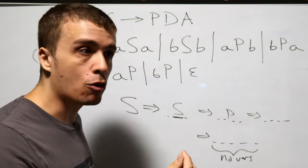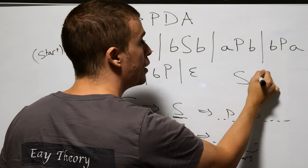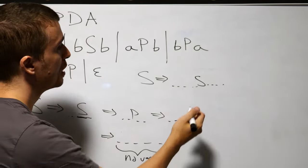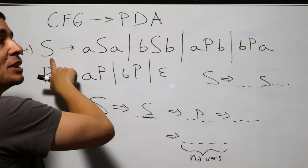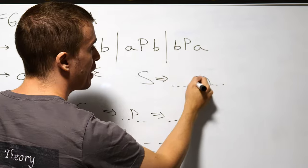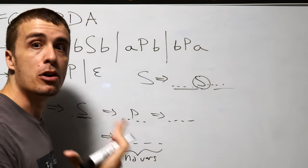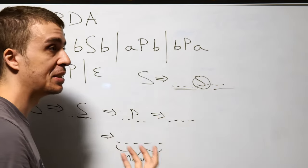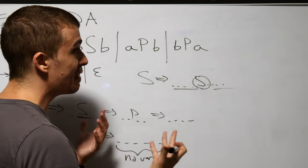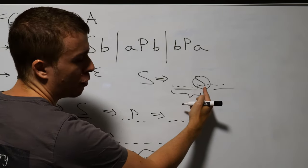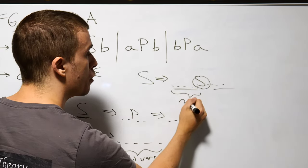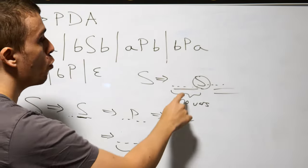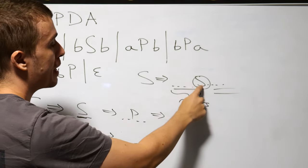If we think about what a context-free grammar does — let's imagine some particular derivation. If we have an S variable that we're going to replace, in a context-free grammar we're always replacing one variable with stuff, while all other things on either side are not replaced. We can focus on when this variable is the leftmost variable — nothing to its left, possibly anything to its right. If we have the leftmost variable, we can always work with that without loss of generality.